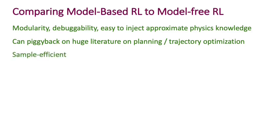Model-based reinforcement learning is also sample efficient. You can learn robotics tasks within only a couple of hours that would be much more difficult with model-free reinforcement learning with the methods we have today. Additionally, you can piggyback on a large literature of many decades on planning, trajectory optimization, and dynamic programming. You also get reusable dynamics models — even with incremental model-based RL, the dynamics model is not entirely task-specific and can be reused for new tasks.